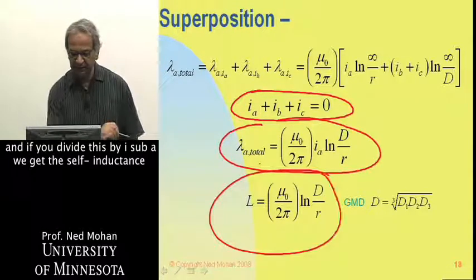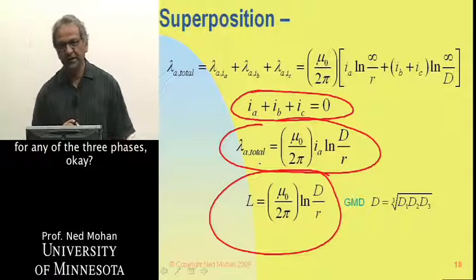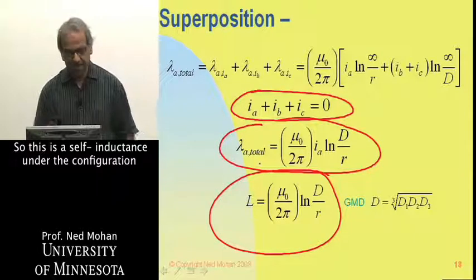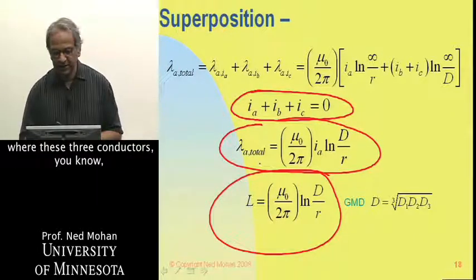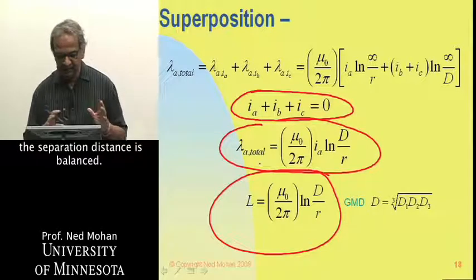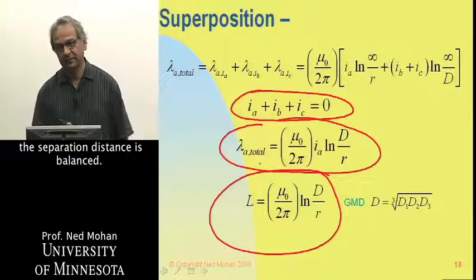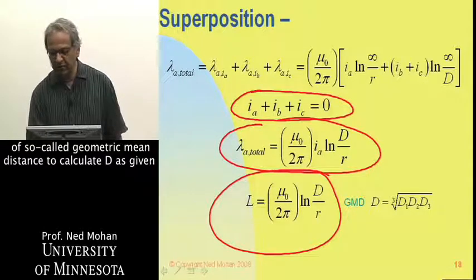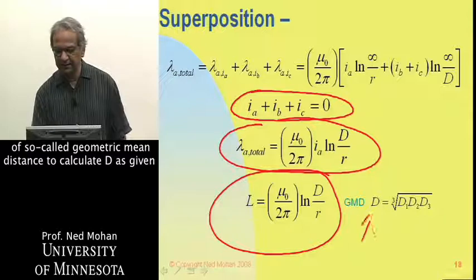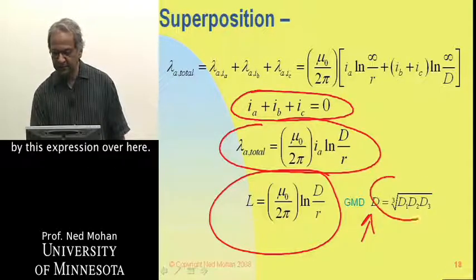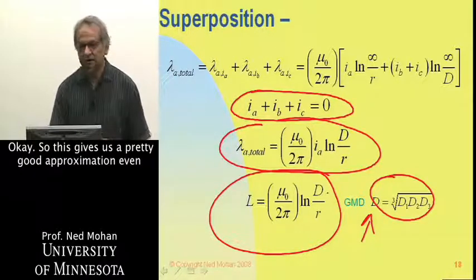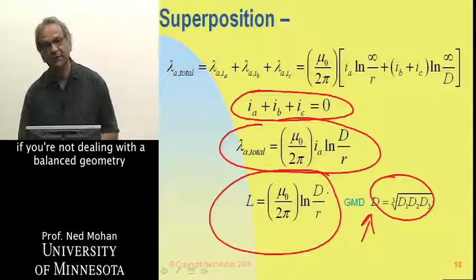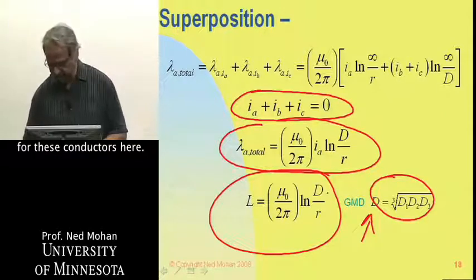we find that lambda a total is given by this expression, and if you divide this by i sub a, we get the self-inductance for any of the three phases, per phase. So this is the self-inductance under the configuration where these three conductors are in, the distance is balanced. But if that is not the case, then we can make use of so-called geometric mean distance to calculate d as given by this expression over here. This gives us a pretty good approximation, even if we're not dealing with a balanced geometry for these conductors here.